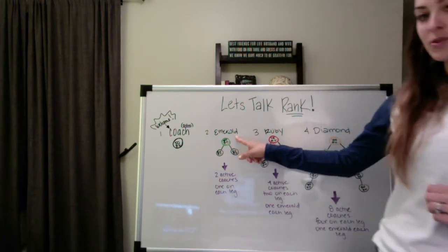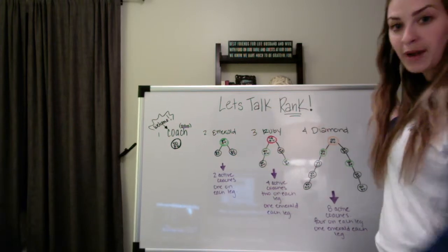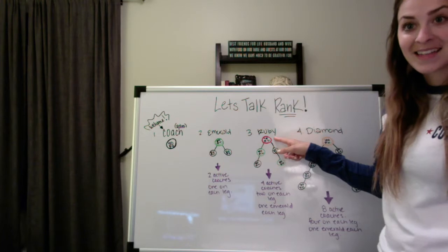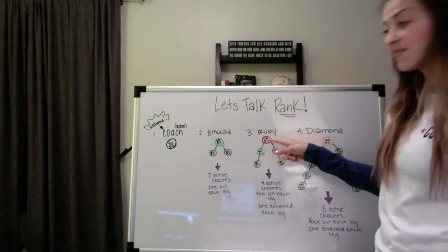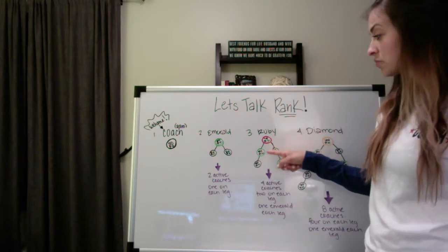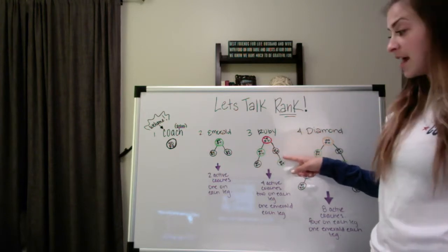After you advance to Emerald and you keep adding to your team, you have your Ruby rank, which is this red color right here. Your Ruby rank means that you now have 75 personal volume every single month and that you have four coaches underneath you, two on each business leg.